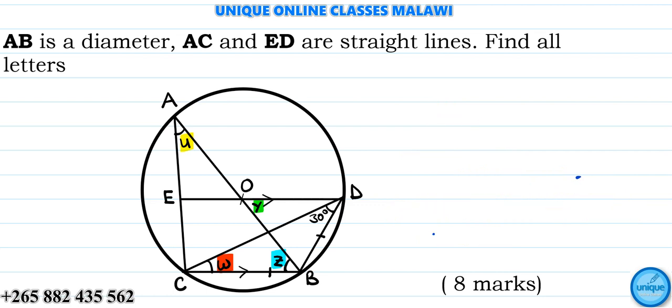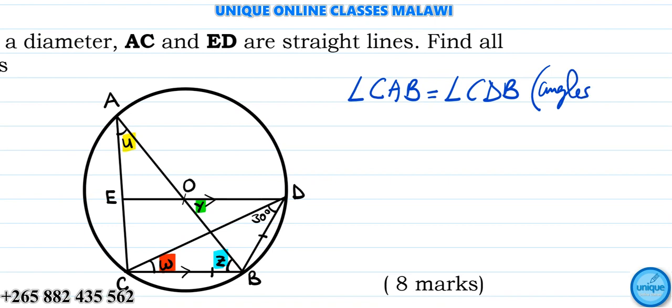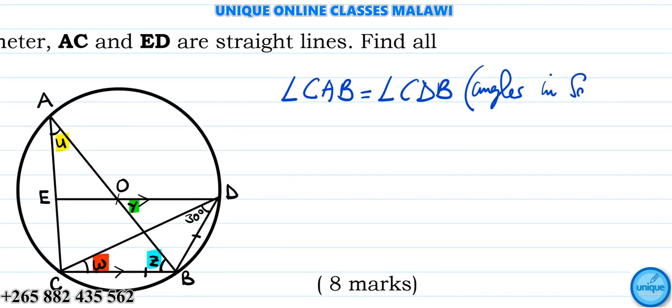Looking at angle CAB, we see that angle CAB is equal to angle CDB. Reason: angles in the same segment, angles subtended by the same chord. So CAB and CDB, that's 30 degrees.